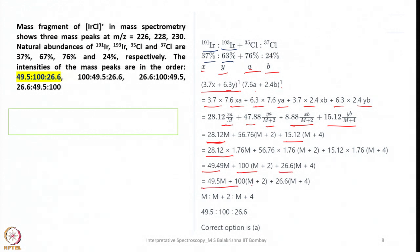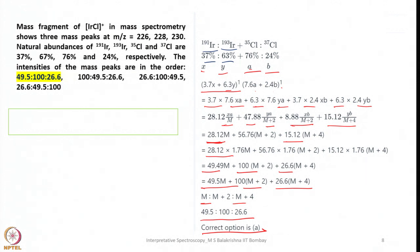The ratio we are getting is exactly 49.5 : 100 : 26.6, so the correct option is A. Just look into it once again and try to make yourself comfortable solving such problems.